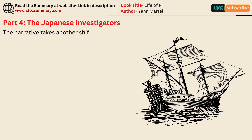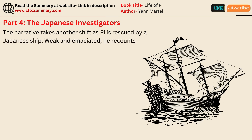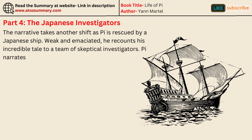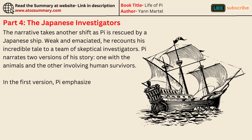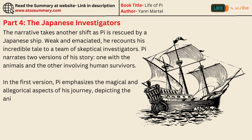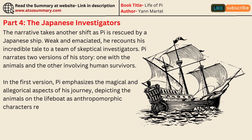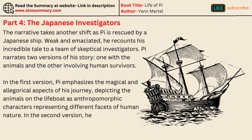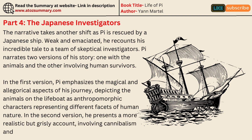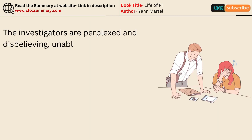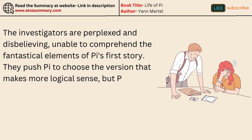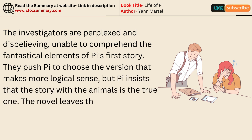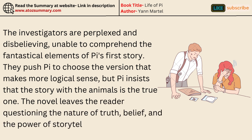The narrative shifts as Pi is rescued by a Japanese ship. Weak and emaciated, he recounts his incredible tale to a team of skeptical investigators. Pi narrates two versions of his story: one with the animals, and another involving human survivors. In the first version, Pi emphasizes the magical and allegorical aspects of his journey, depicting the animals as anthropomorphic characters representing different facets of human nature. In the second version, he presents a more realistic but grisly account involving cannibalism and murder among the human survivors. The investigators, perplexed and disbelieving, push Pi to choose the version that makes more logical sense, but Pi insists that the story with the animals is the true one. The novel leaves the reader questioning the nature of truth, belief, and the power of storytelling.